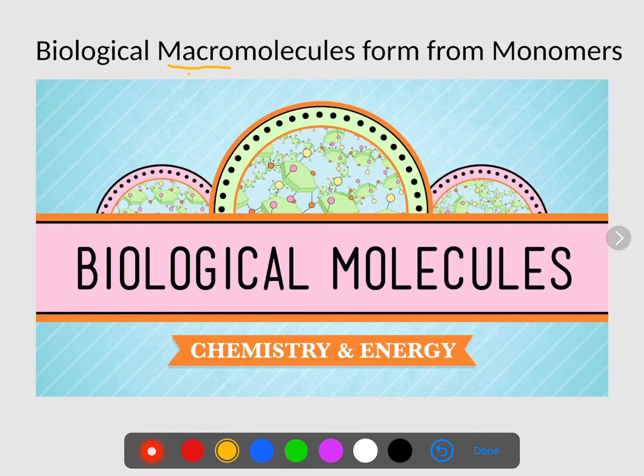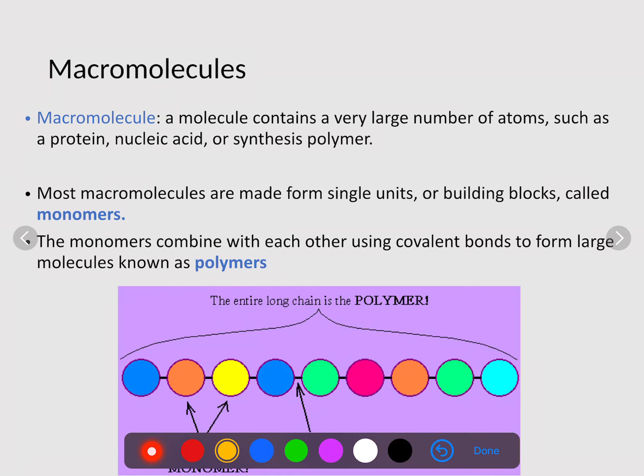Macro is just a fancy word for big, so we're talking about big, large molecules here. Remember, monomers just means they are made of one part, so we're talking about how macromolecules, which are many parts, are made of these monomers, which is the single unit.